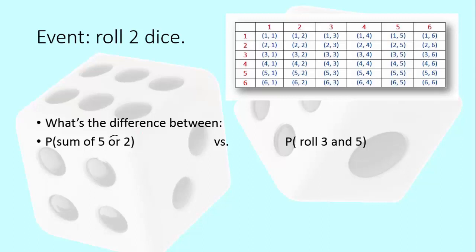Let's talk about the general difference between the word or and the word and when they're in probability questions. When we talk about the sum of five or two, here's what happens. Just the sum of five would include all the rolls that add up to five, like a three and a two or a two and a three, a one and a four and a four and a one. So we've got four things. So that probability of just five would be four out of 36, right?